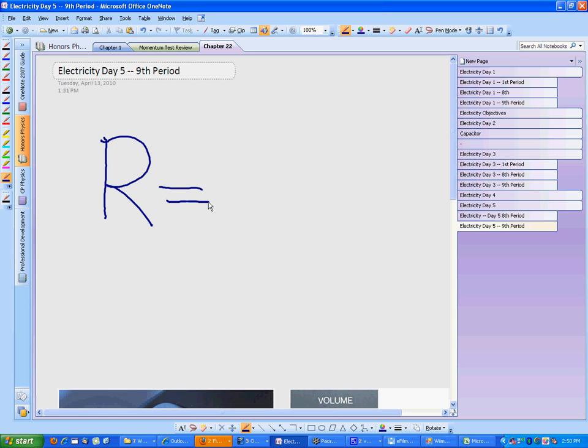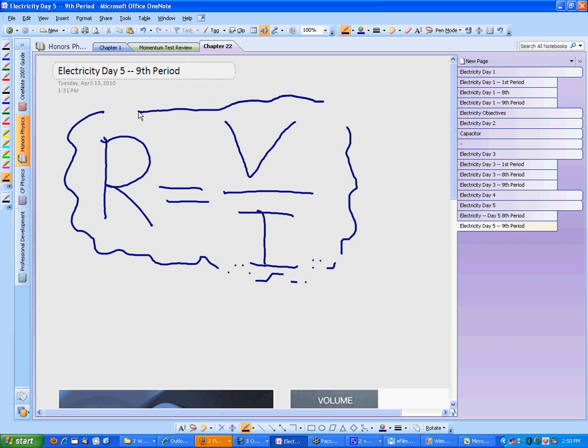What would the gradient of the slope of that graph be? What would the y-axis? Voltage. So it would be potential difference divided by the current. Yay. We're amazing.